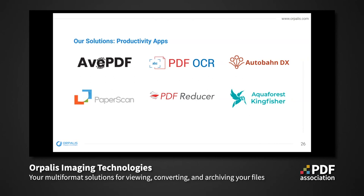AutobahnDX is a batch OCR and PDF conversion server for Windows servers. It is able to process a variety of different input documents including TIFF PDFs, Microsoft Office documents, and HTML pages. Aquaforest Kingfisher is a PDF text extractor for PDF reports and documents, helping to unlock and organize key business information trapped in PDF documents such as financial records, customer reports, scanned files, and payment runs.